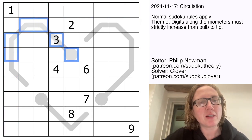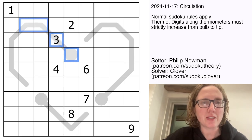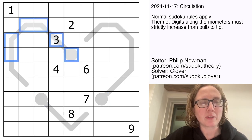And then we also have some thermometers in the grid and along the thermometers digits have to increase starting with the lowest digit in the round bulb and then going upwards as we move along the thermometer towards the tip.